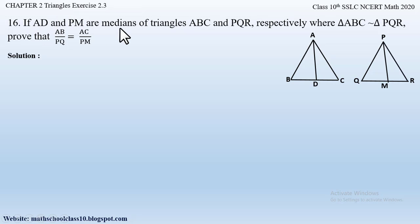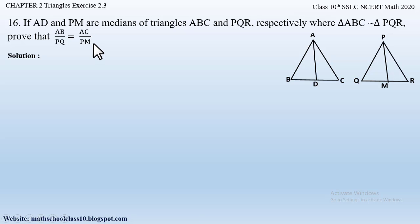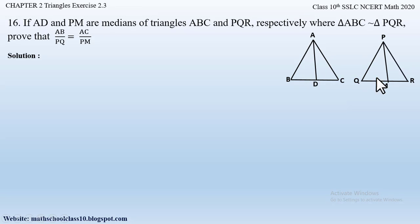Question number 16 from Exercise 2.3 Chapter 2 Triangles says: if AD and PM are medians of triangle ABC and triangle PQR respectively, where triangle ABC is similar to triangle PQR, prove that AB by PQ is equal to AD by PM. In this question they have not given us a figure. There are two triangles ABC and PQR, and AD and PM are the medians of triangle ABC and PQR respectively.